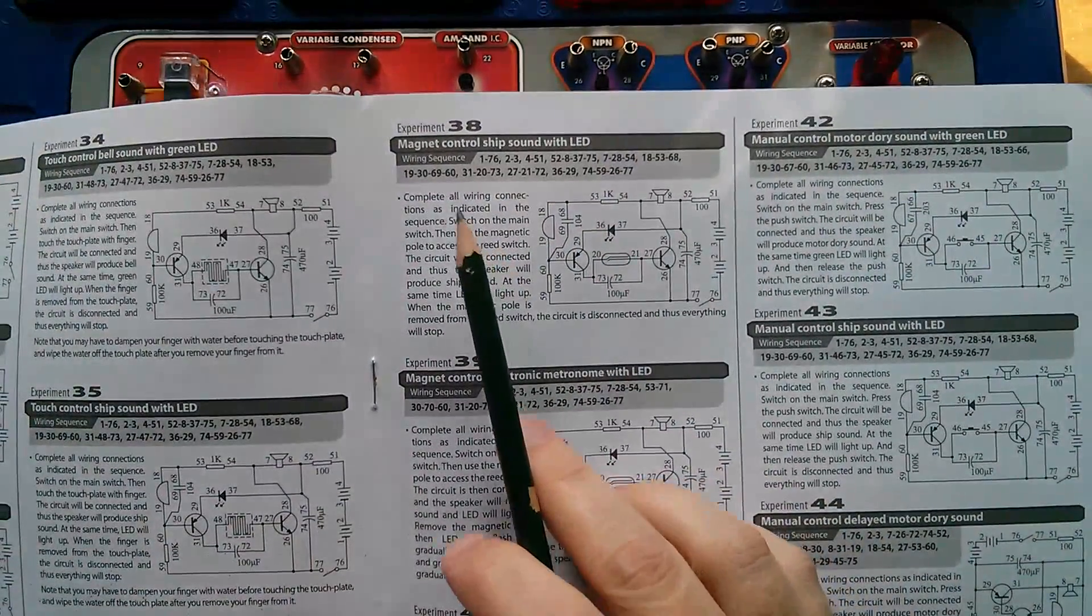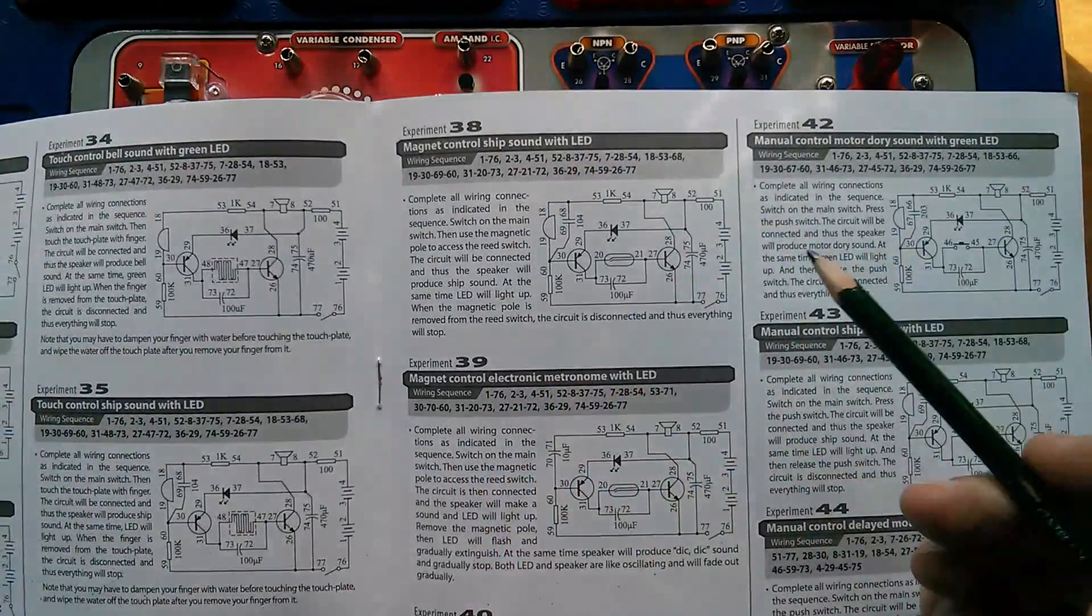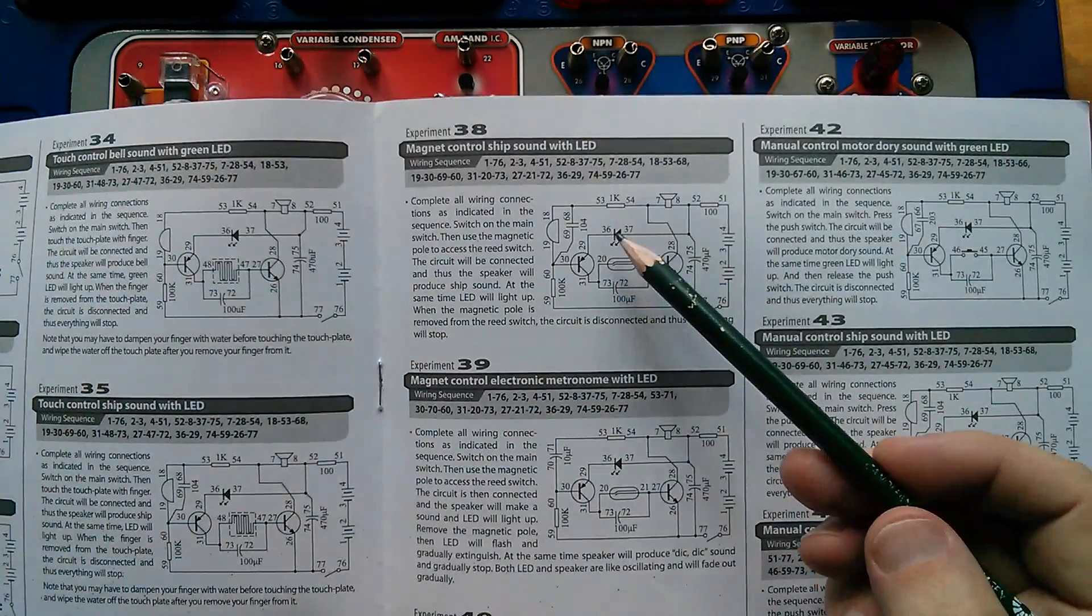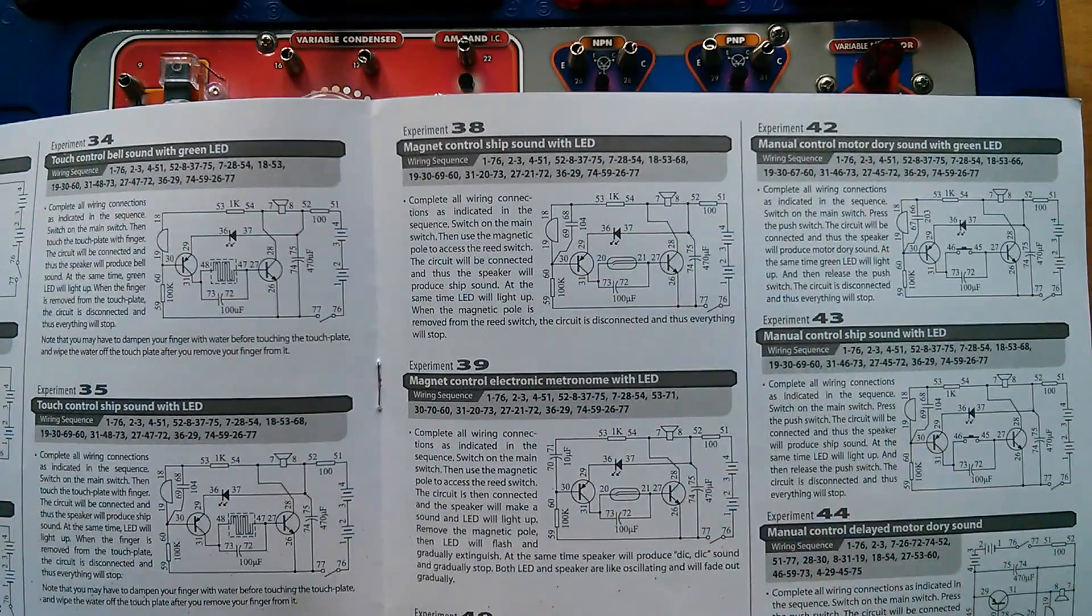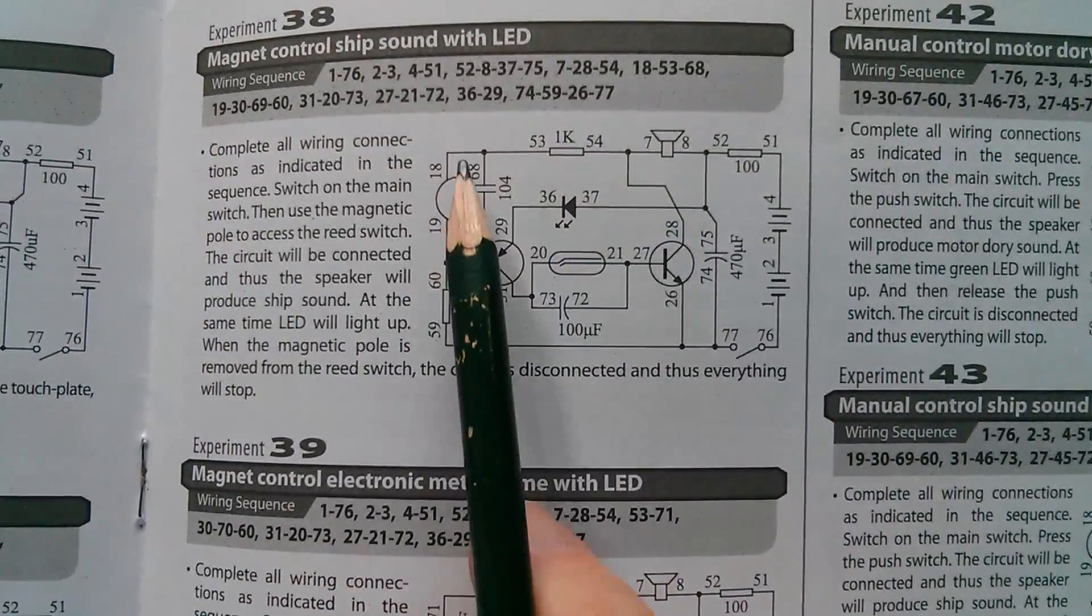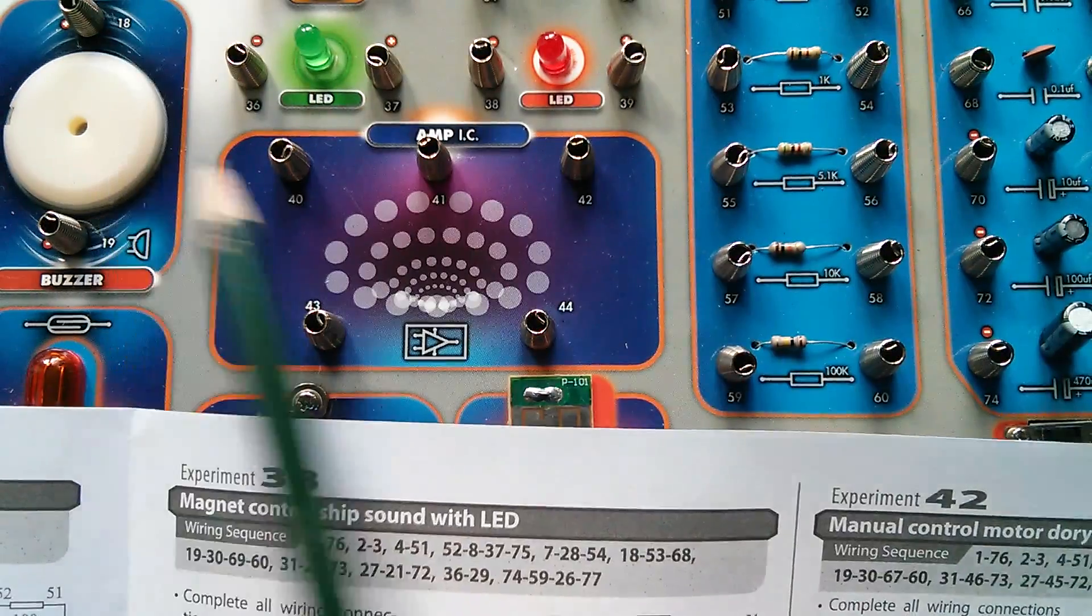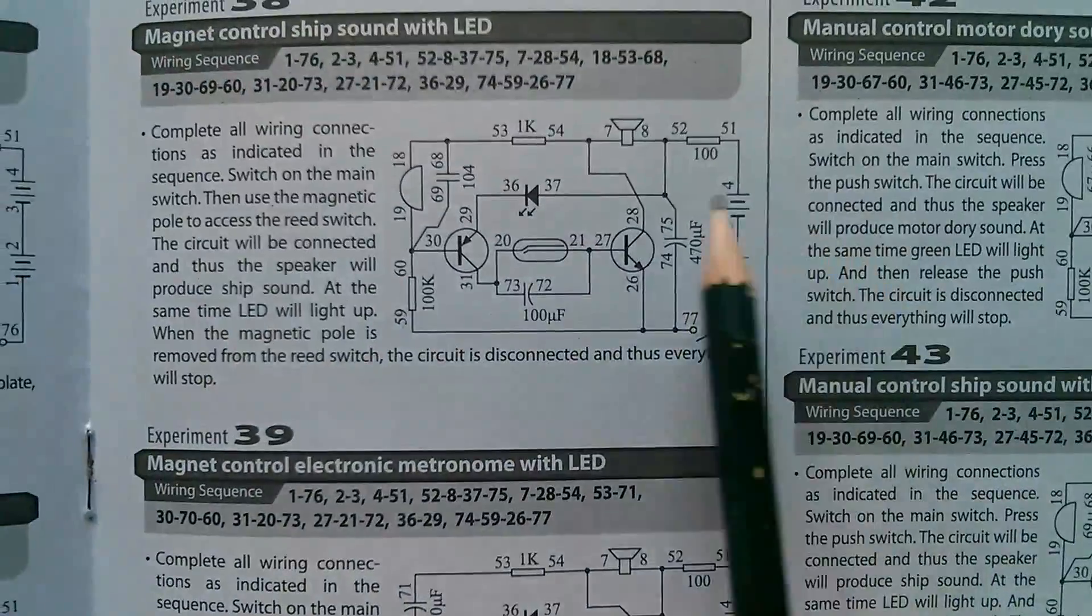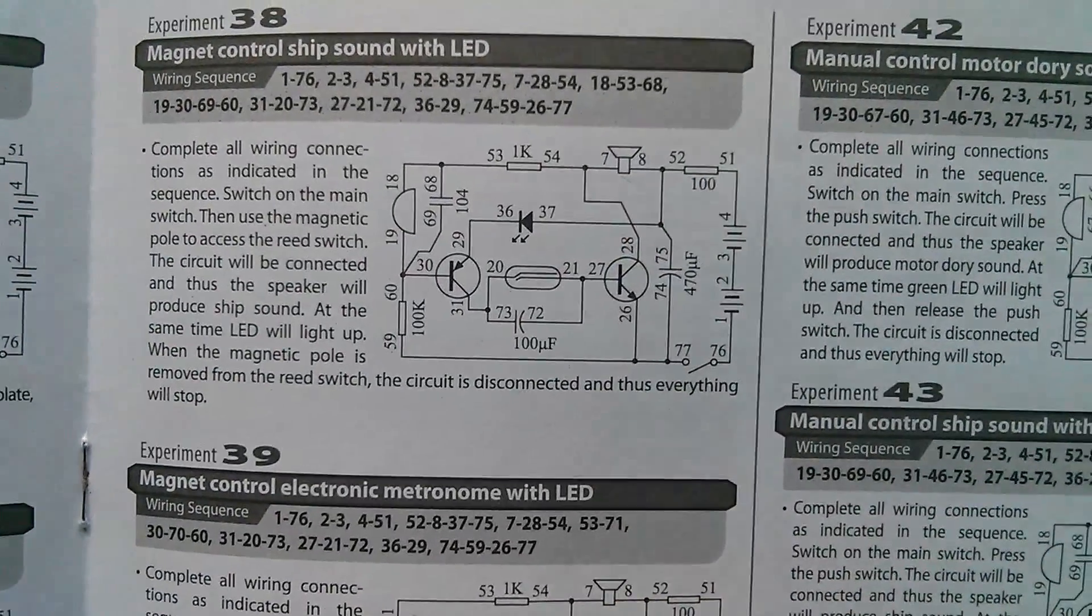Right, well, I quite fancy this one. Magnet control ship sound with LED. We've got an NPN transistor, PNP, we've got the reed switch, green LED. Strangely, actually, I'll get in just a bit closer on that. I couldn't quite work out what this was, 18 and 19, but it's here. 18 and 19 is the piezo buzzer. That doesn't look like a self-buzzing buzzer, but they've also got the speaker here, 7 and 8. Is that the speaker? Yes, that's the speaker up on the top right-hand corner.